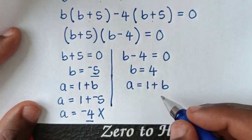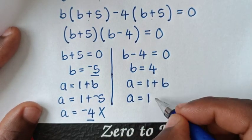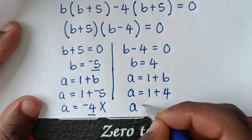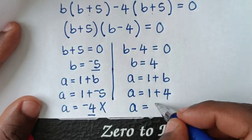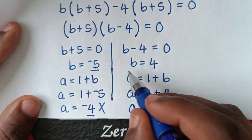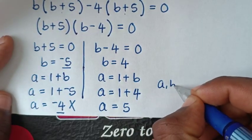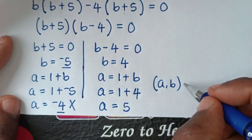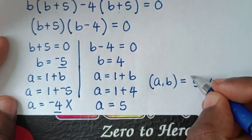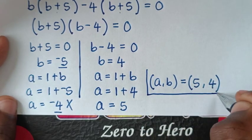Then, from the second solution, a is equal to 1 plus b, and b is 4, so a equals 1 plus 4, which is 5. Therefore, a is 5 and b is 4. Our conclusion is that (a, b) is equal to (5, 4), and these are natural numbers.